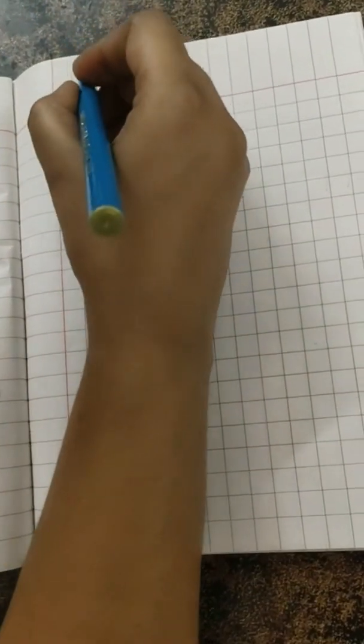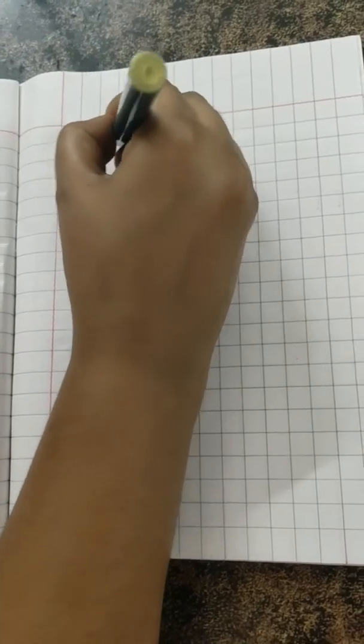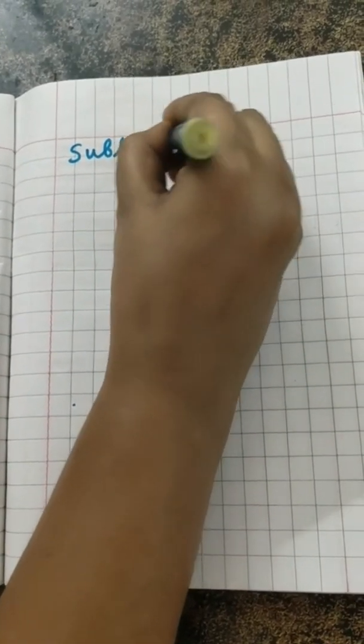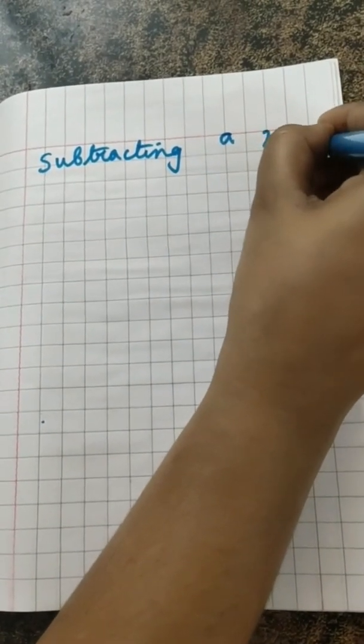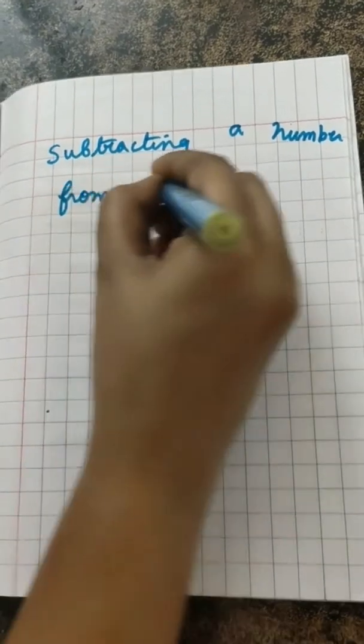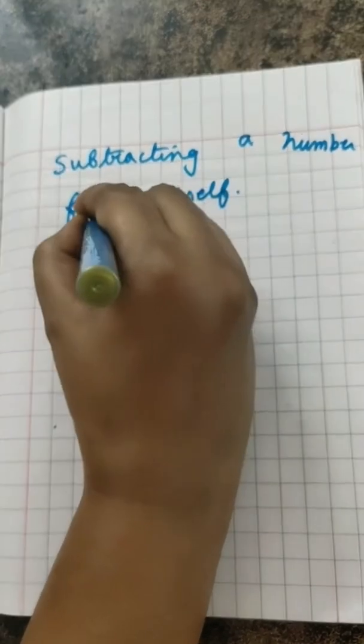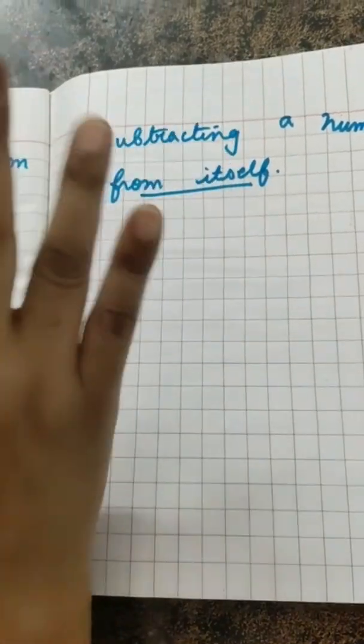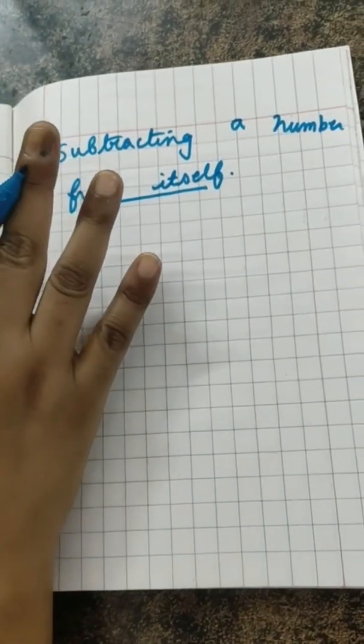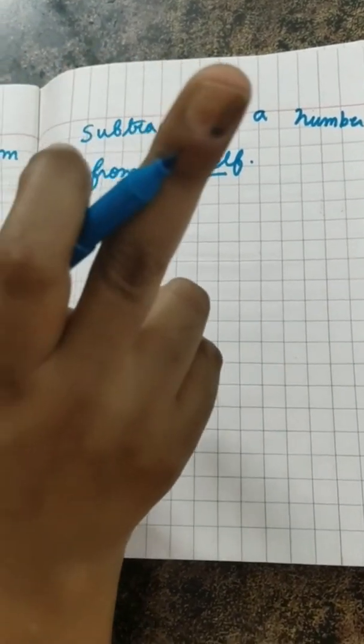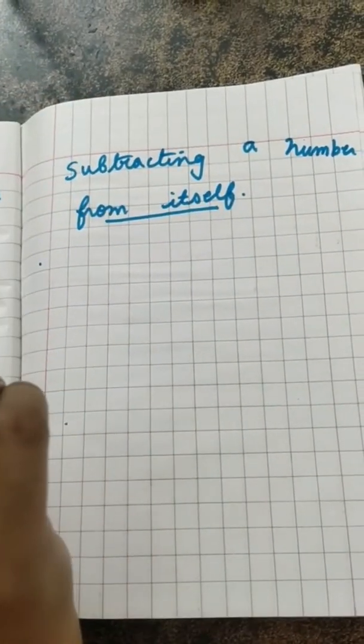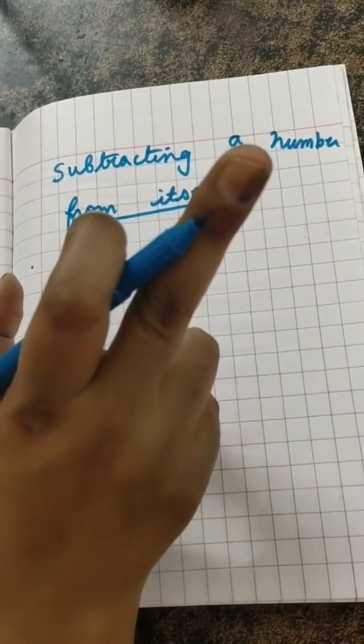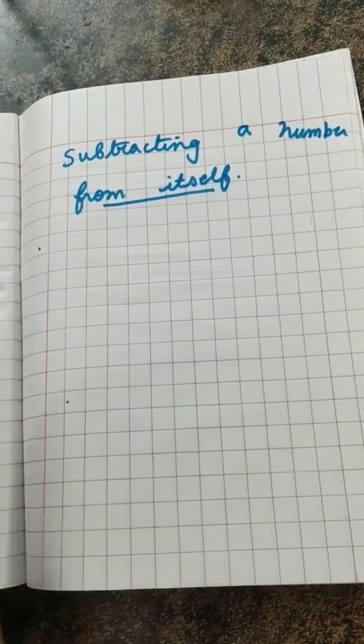And the third fact which I am going to tell you all is subtracting a number from itself. What does it mean, children? Any guesses? Now I am going to tell you. Suppose anyone from you - Ritika, yes, Ritika Paul. If Ritika Paul has 5 pomegranates and she ate all, 5 minus 5, what will be the question? 5 minus 5, what is left with Ritika?